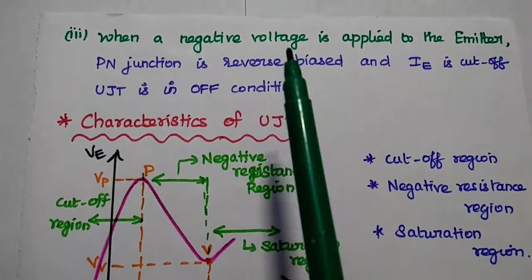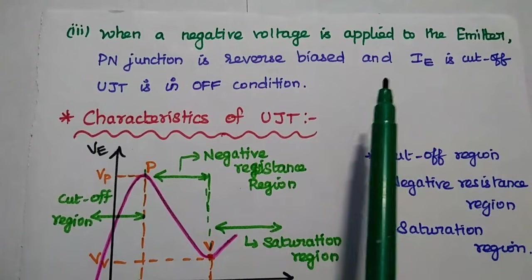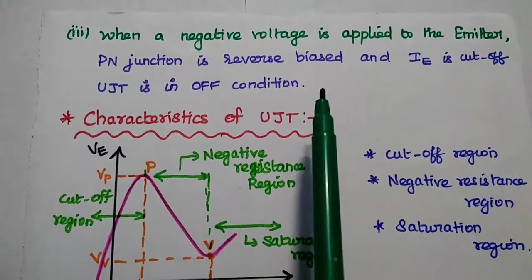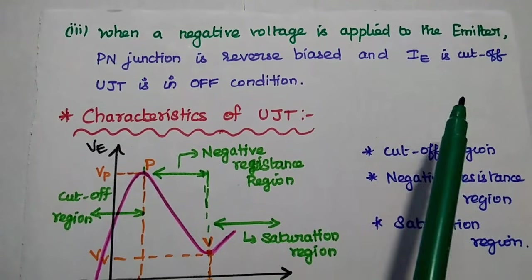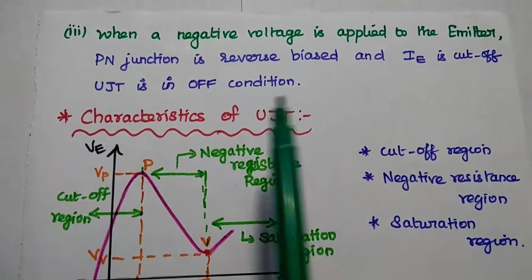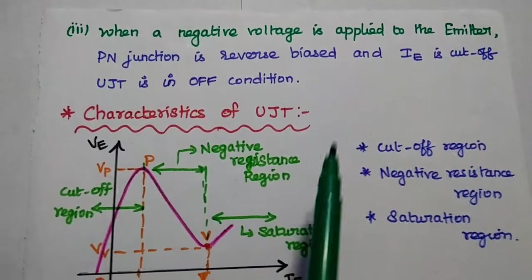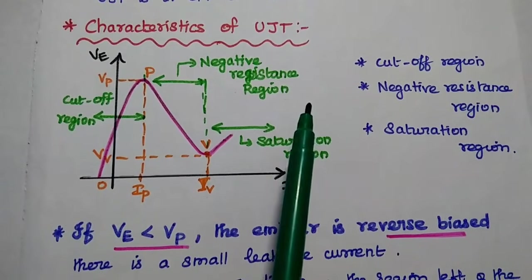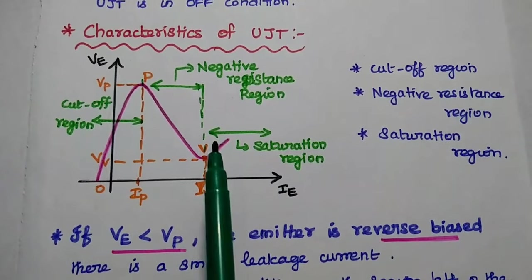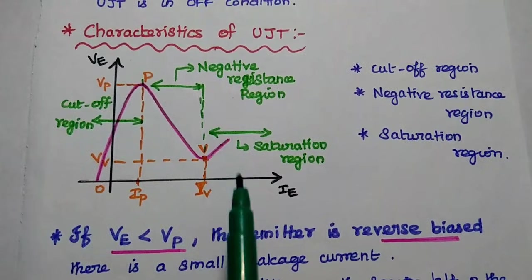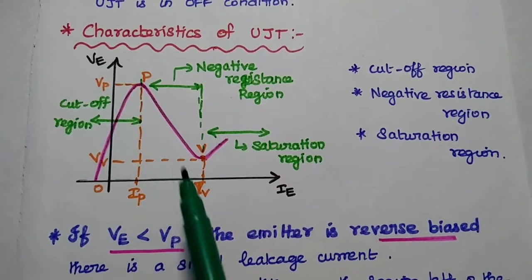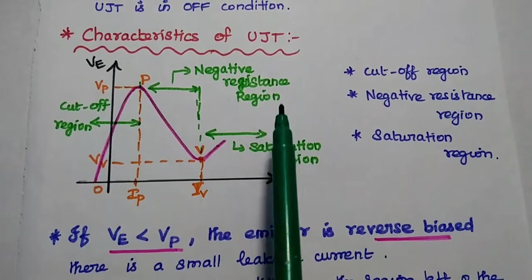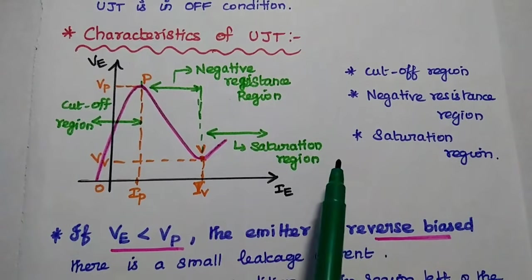The third condition: when a negative voltage is applied to the emitter, the PN junction is reverse biased and emitter current is cut off — that is, the UJT is in the off condition. Next, the characteristics of UJT. There are three regions in the IE versus VE characteristics: cut-off region, negative resistance region, and saturation region.